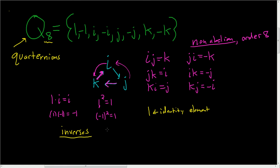So 1 is its own inverse. And that should make sense, because we're saying it's the identity element. Negative 1 is also its own inverse, so it's an element of order 2 in this group.